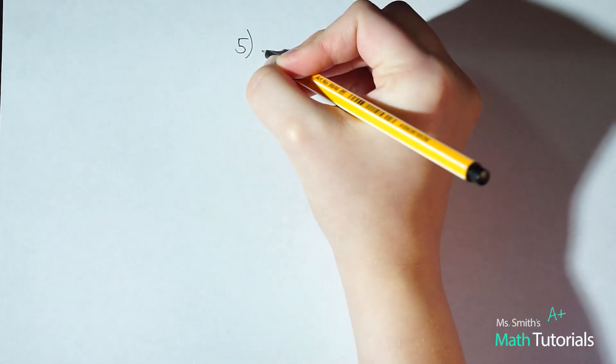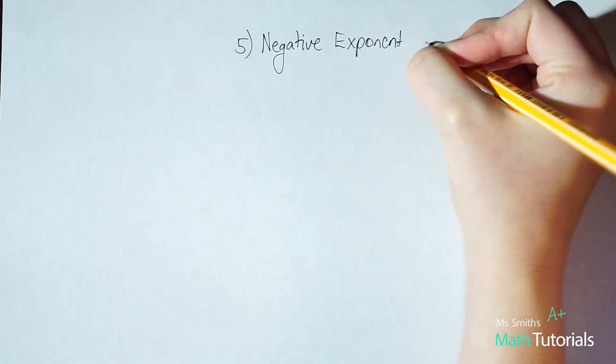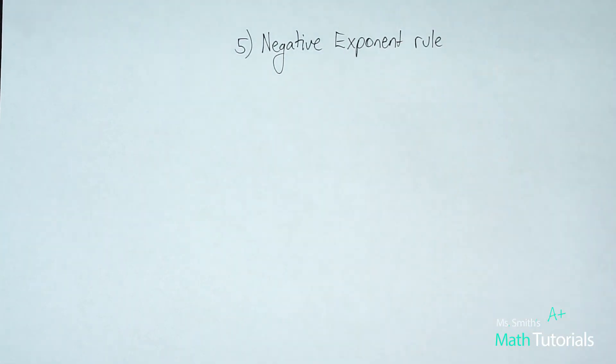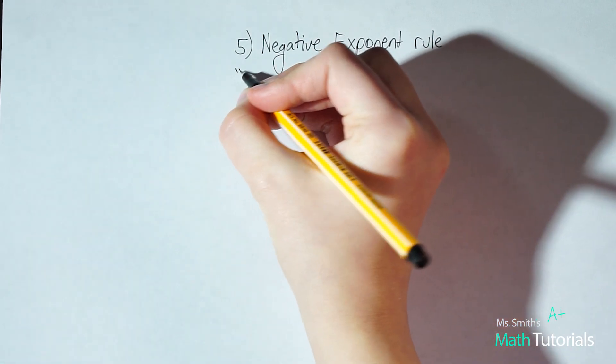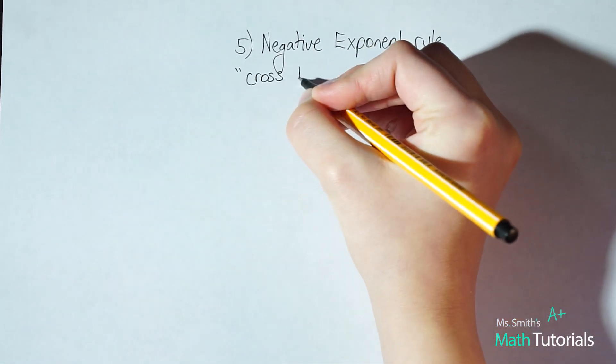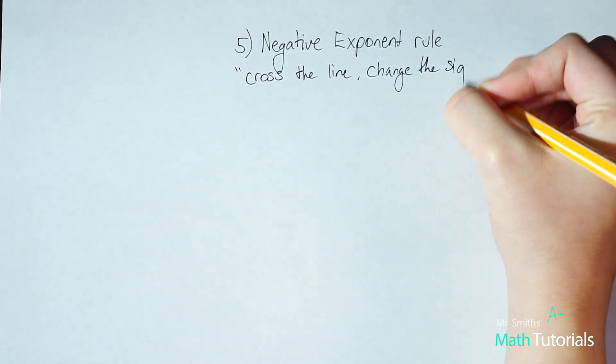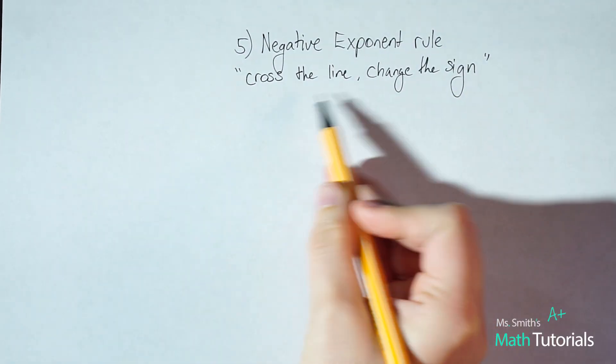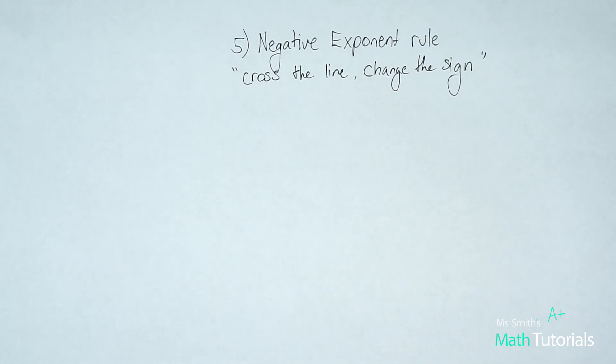First one that we're going to talk about is the negative exponent rule. So basically the negative exponent rule states that anytime you have a negative exponent, you want to cross the line, change the sign. So this is kind of a handy little rhyming reminder that makes it easy to remember what to do.